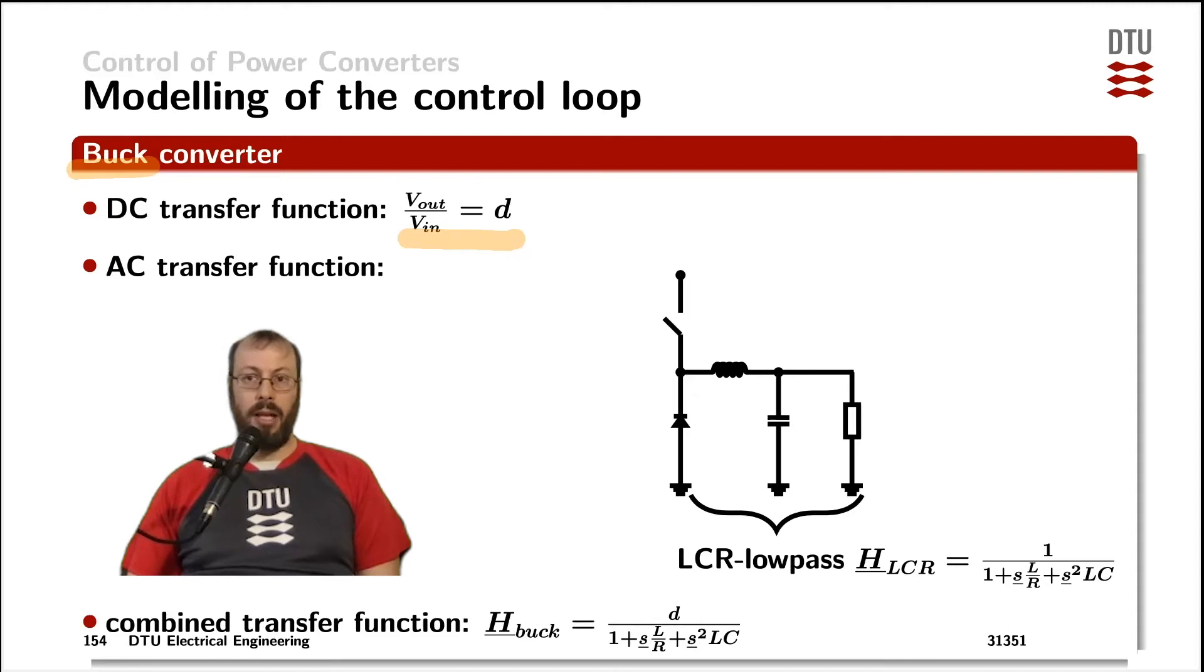Now the AC transfer function of a buck converter is described by its passive components towards the output and only for a buck converter you can use a linear time invariant circuit to derive the transfer function.